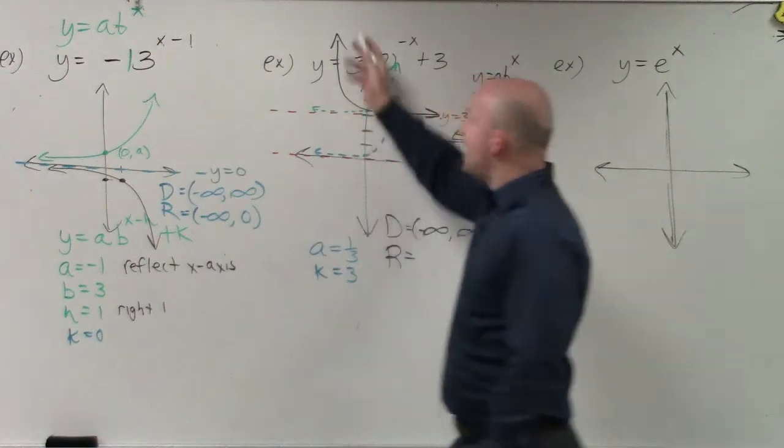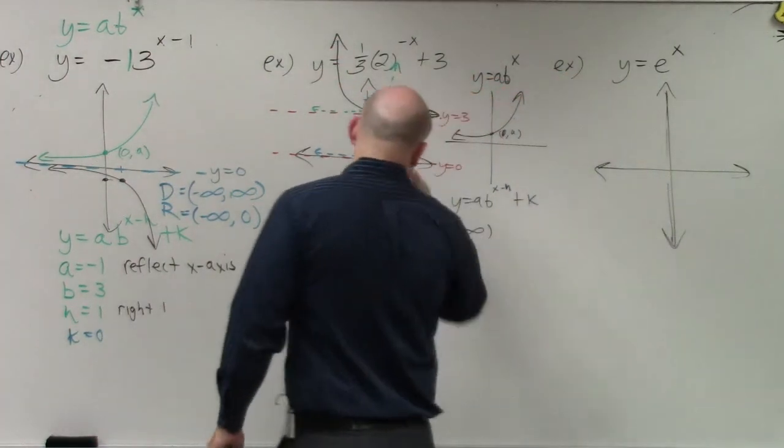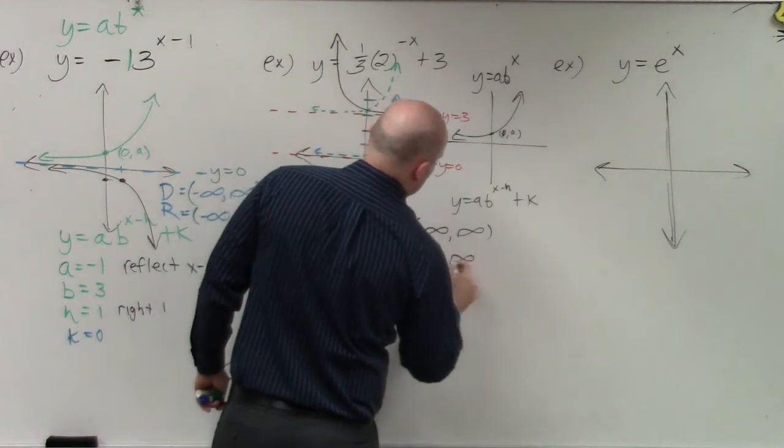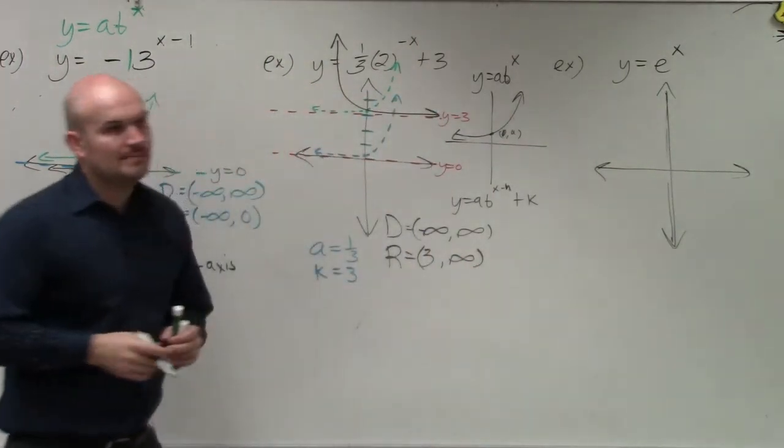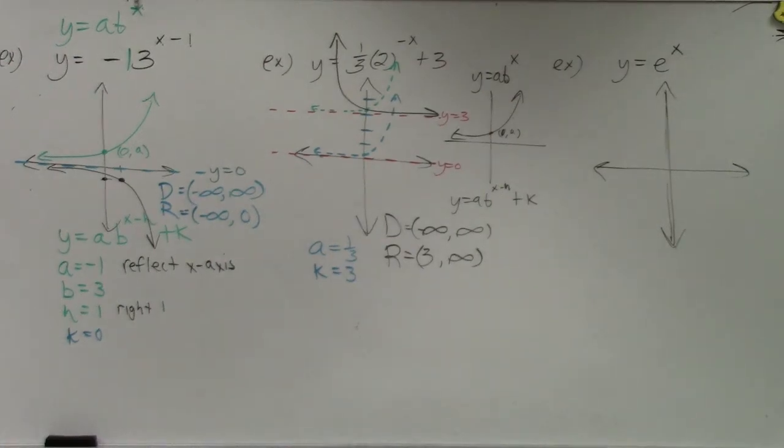Whereas the range, how low does this graph go? 3. And then how high does it go? Infinity. Now, there's one thing I want you guys to understand real quick, just at least as far as domain and range go.